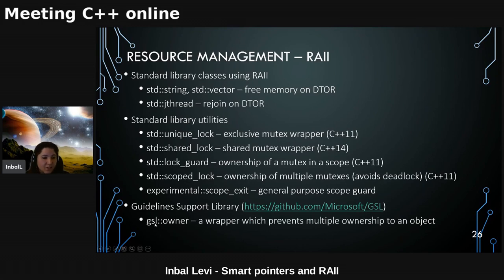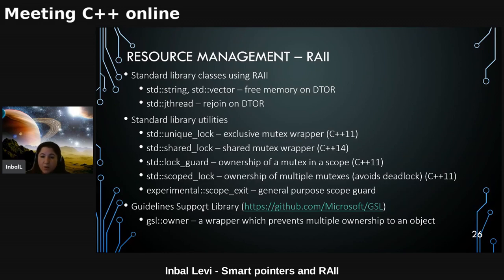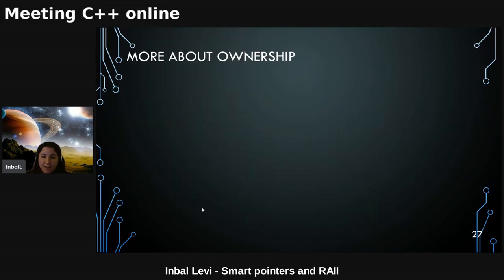Bjarne's talk mentions the GSL — Guideline Support Library — currently only implemented in MSVC, written by the C++ Core Guidelines team and appearing on isocpp.org. I recommend even experienced developers go over it. One interesting utility is gsl::owner, a wrapper that permits multiple accesses to an object once we know its ownership. This connects to the main topic: considering ownership is not only about dynamic allocation or memory — it's also about who, and in what part of the program, can access and change the values of an object.